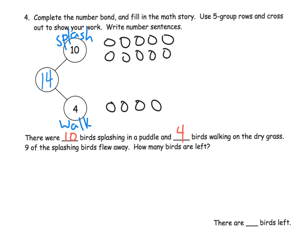Nine of the 10 splashing birds. Nine of the splashing birds flew away. So that's going to be 1, 2, 3, 4, 5, 6, 7, 8, 9. So there is our, the ones that flew away. How many birds are left? And we can see there's one up here plus four down here. So there are five birds left.